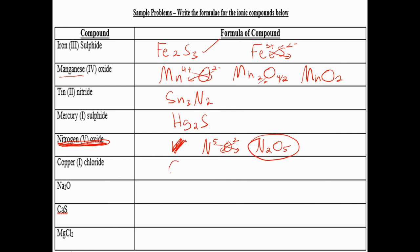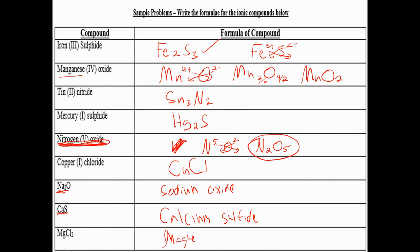For the last few: sodium oxide — you don't need brackets because sodium is not multivalent, it's just Na₂O. Calcium sulfide — calcium is not multivalent, so just CaS. Magnesium chloride — magnesium is not a multivalent element, so no Roman numeral needed, just MgCl₂.